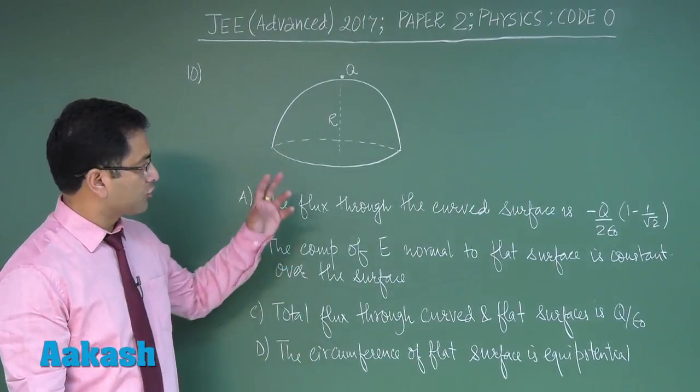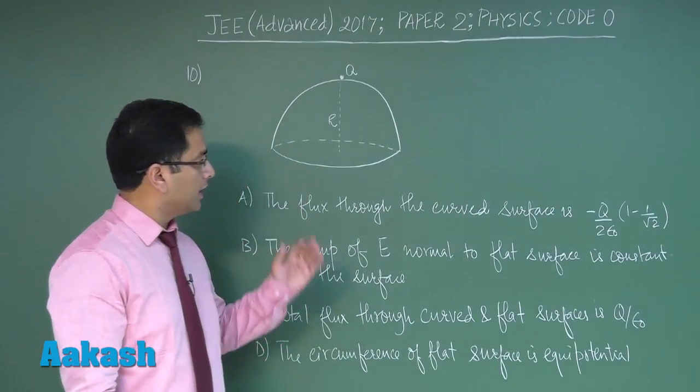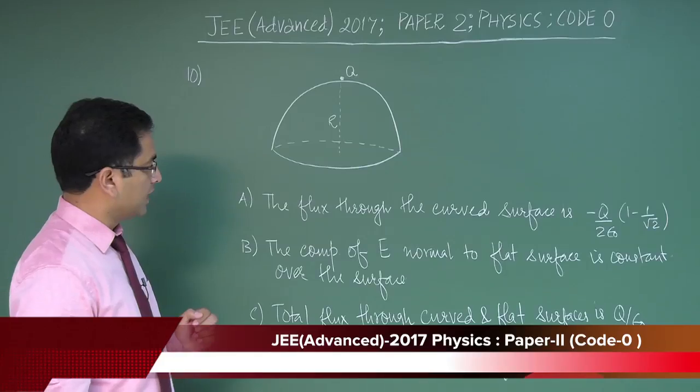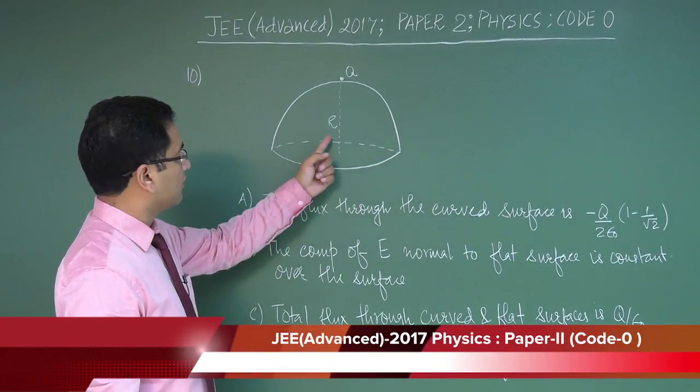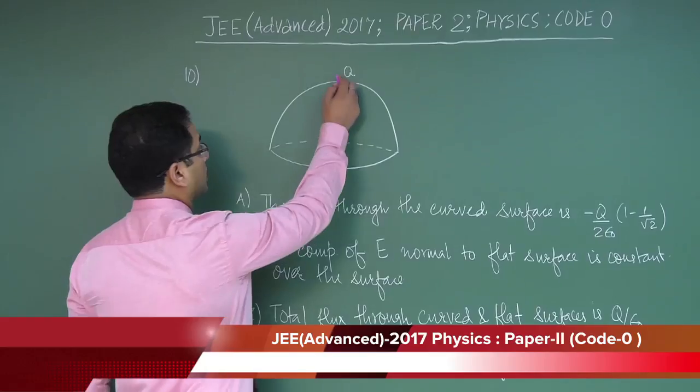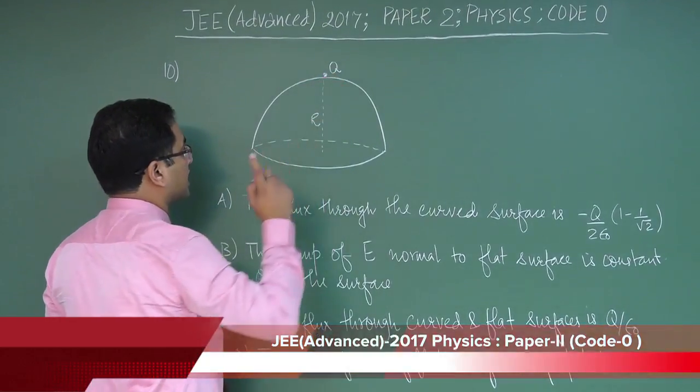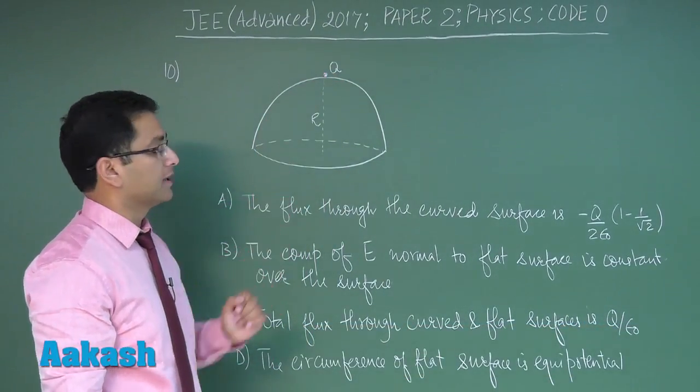Question number 10, a straightforward question asked through the topic of electric flux. A hemispherical surface is given of radius r and a charge Q is placed just above the surface right here.